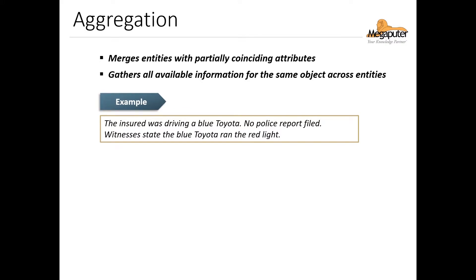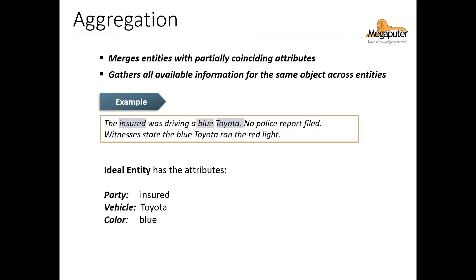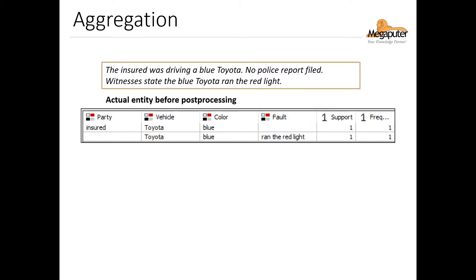Here we have a claim record and we'd like to extract the insured party entity. The entity we'd like has the following information extracted as attributes. We can extract the party this claim refers to, which is the insured, and we can identify the vehicle type and the color of that vehicle. We can also assign fault for the accident. If we don't use the aggregation post processor, this is how the scattered information for the entity is extracted.